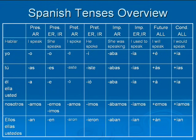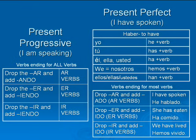So this is an overview of all the tenses we learned. The present would be: I speak, or she speaks. The preterite would be: I spoke, or he spoke. Imperfect would be: he was speaking, or I used to speak. The future would be: I will speak. And the conditional would be: I would speak. These are the endings for all the regular verbs. There are also going to be irregular verbs that do not follow this pattern. And the present progressive: I am speaking. And the present perfect: I have spoken.